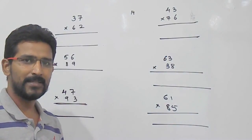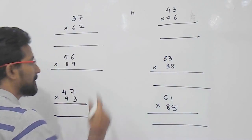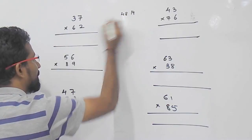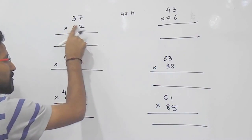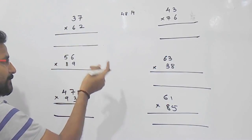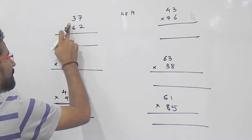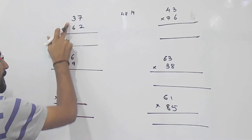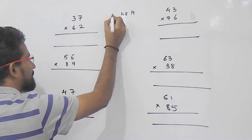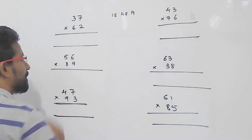So, 42 plus 6 that is 48. We will write them. Cross multiply the values and add them, and then multiply the tens place value, 3 into 6 that is 18.